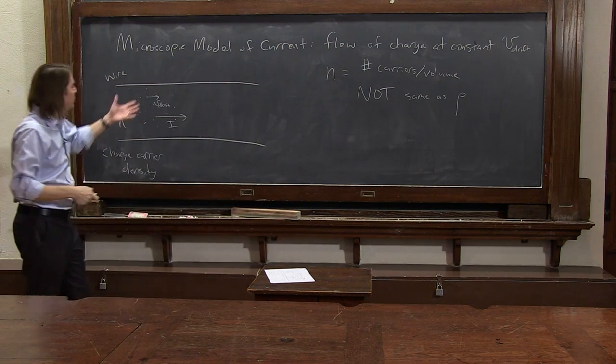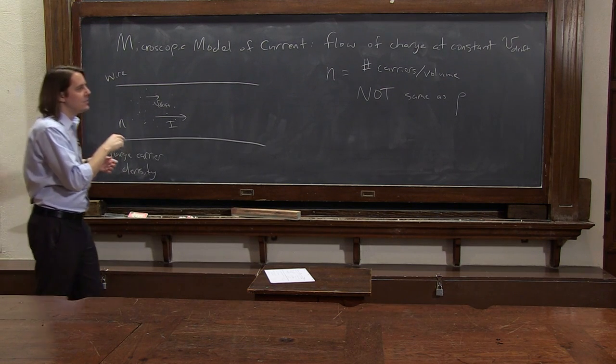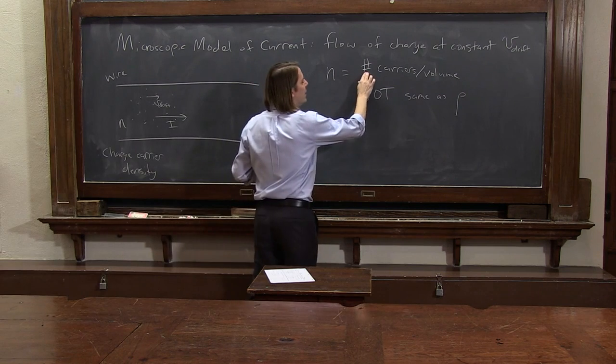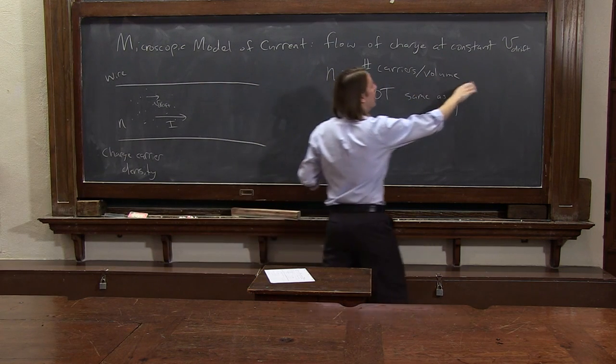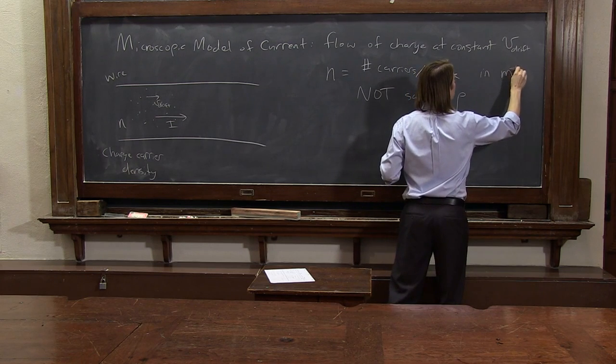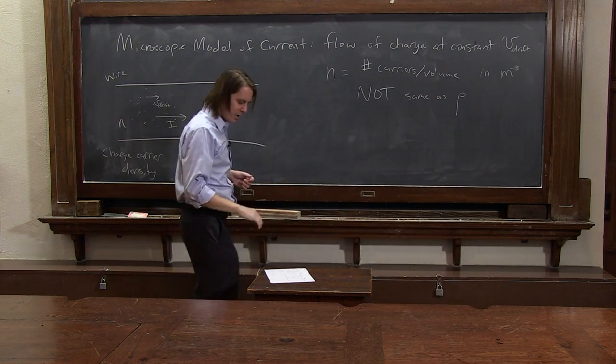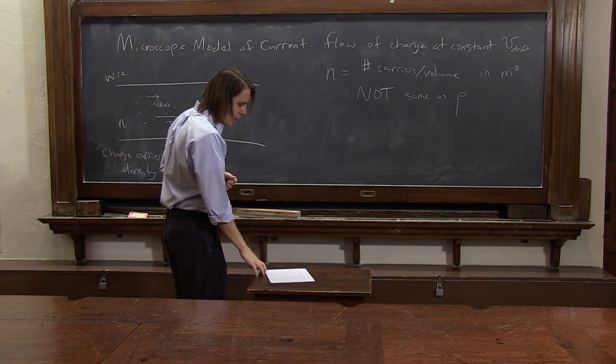If it's protons, then it would be multiply it by e. If it's electrons, multiply it by negative e. So n is literally a number here. Its unit is simply inverse meters cubed. There's no charge in n. Lowercase n.